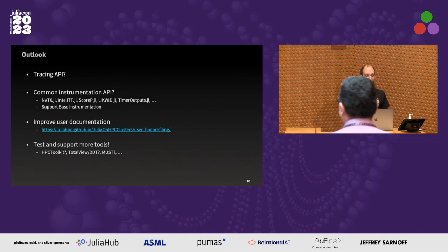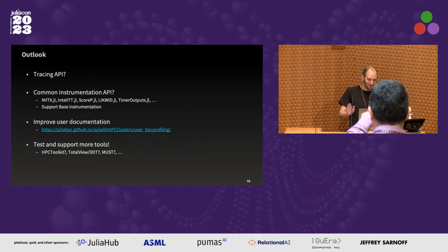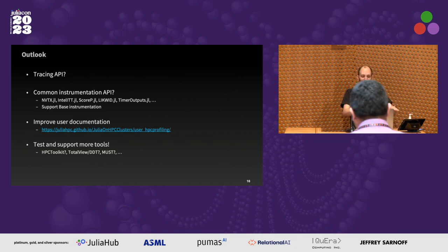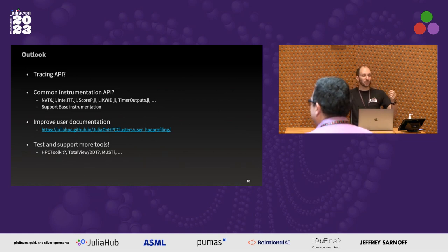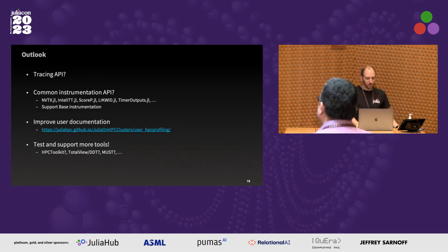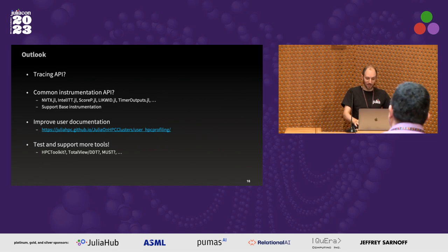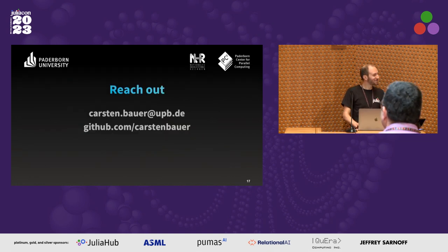Final slide: a tracing API — I want it. I don't know who's going to provide it, but I'm on board to help. We need common instrumentation so that all the packages we have could share just one macro where you can switch the backend, so you don't have to instrument the code multiple times. User documentation, more tools — there are lots of them out there and lots of work to be done. That's it. Reach out to me. Thank you.